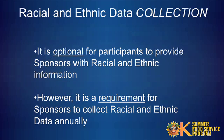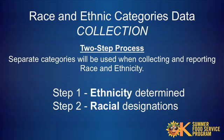An important point to note regarding racial and ethnic data collection is that it is optional for participants to provide racial and ethnic information. However, it is a requirement for sponsors to collect and maintain racial and ethnic data on an annual basis. Visual identification may be used to determine a participant's racial-ethnic category. School districts may also use student enrollment information. Racial and ethnic data collection is a two-step process; separate categories will be used when collecting and reporting race and ethnicity, from enrollment records or actual attendance.